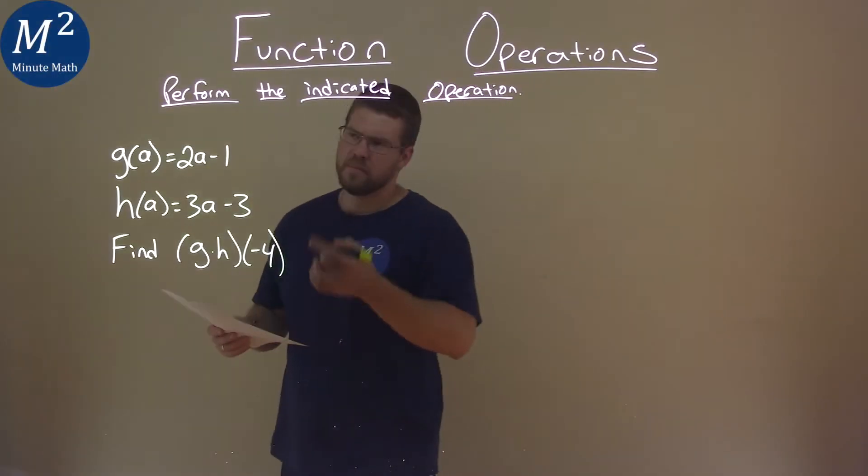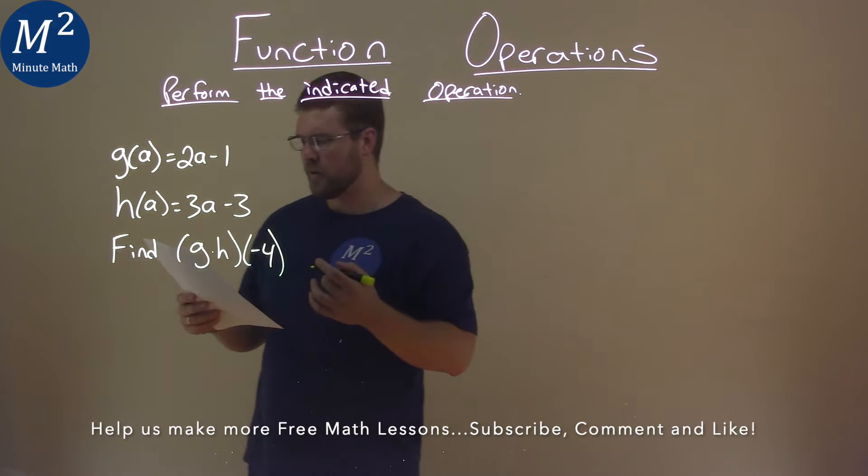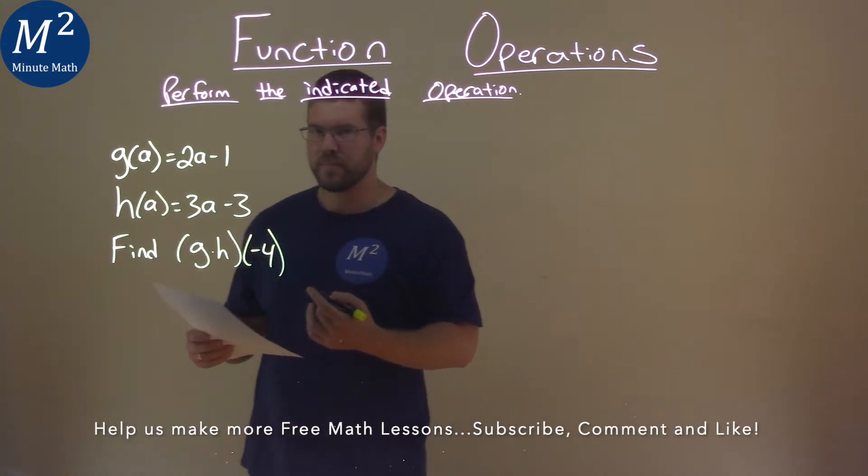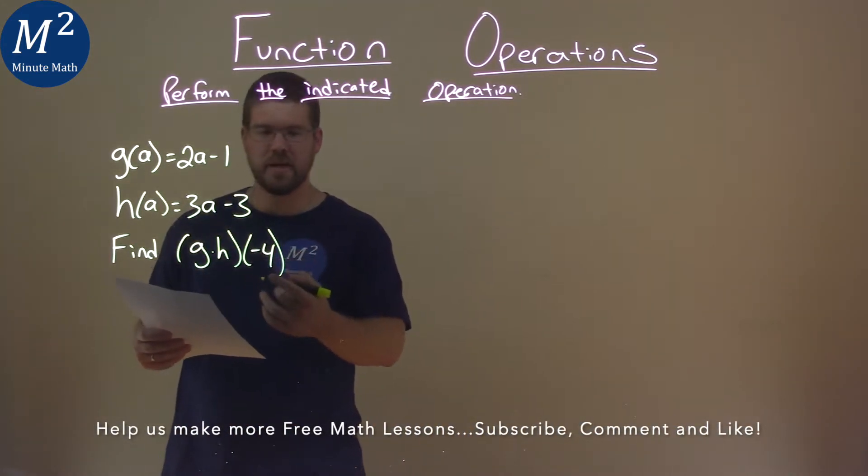We're given this problem right here. g of a equals 2a minus 1, h of a equals 3a minus 3, and we want to find g times h of negative 4.